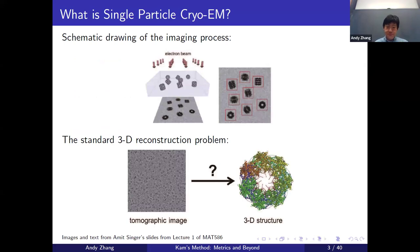What is single-particle cryo-EM? Here we have a schematic drawing of the imaging process. The key idea is that we have a protein and we want to solve for its structure. A cryo-electron microscope works by taking multiple samples of this protein, frozen in a thin layer of vitreous ice. An electron beam shoots electrons through, and at the bottom we have a receptor that detects the diffraction pattern of the electrons. Through this process, we get multiple projection images of the proteins.